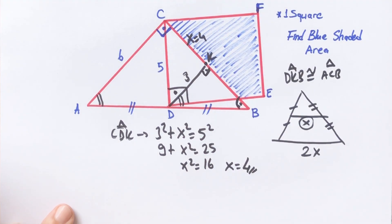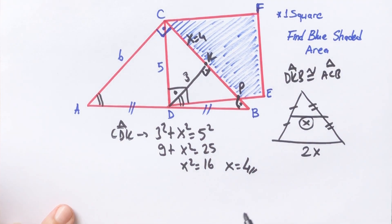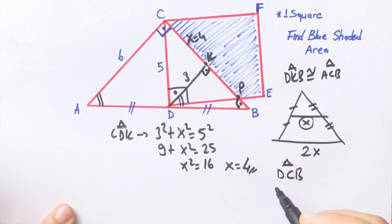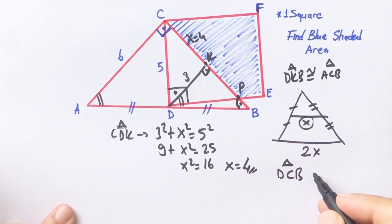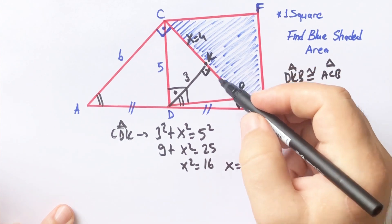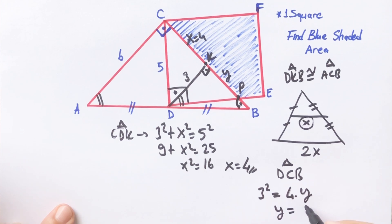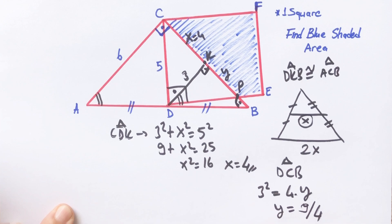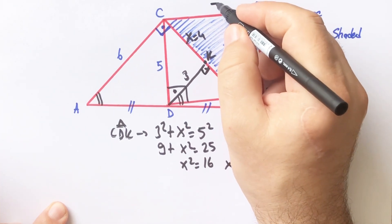x equals 4 units. Let's call point P. In triangle DCB, we apply Euclid's theorem: 3 squared equals 4 times y, so 9 equals 4y, and therefore y equals 9 over 4 units.